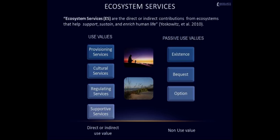Ecosystem Services can be generally divided into two groups: those with use values and those with non-use or passive use values. Use values are those services that are used either directly or indirectly by humans. They are usually divided into four categories: provisioning, cultural, regulating, and supportive.